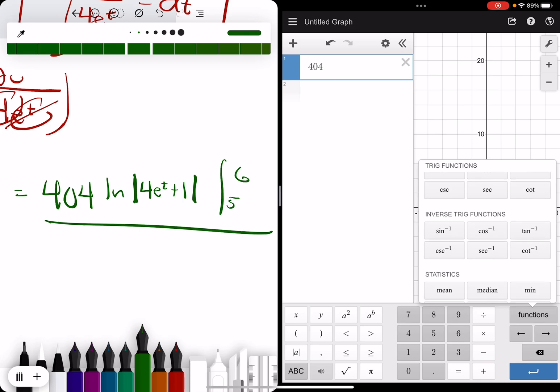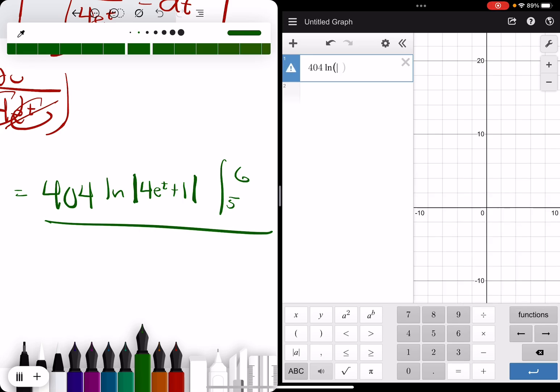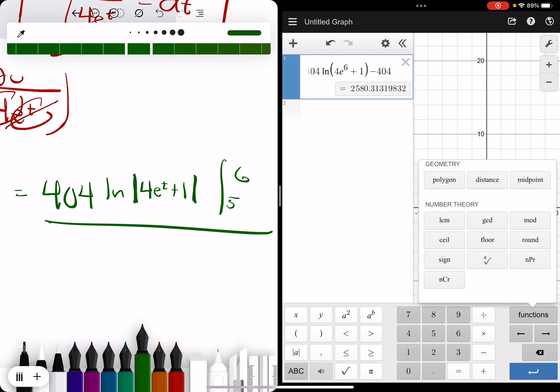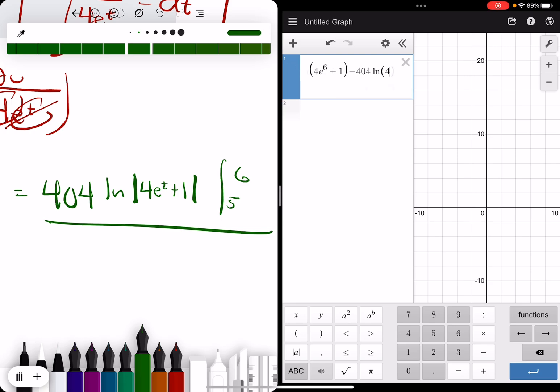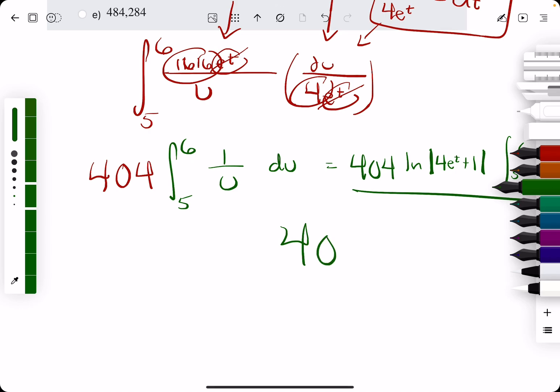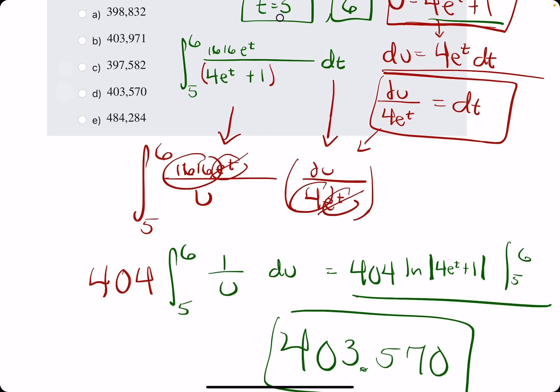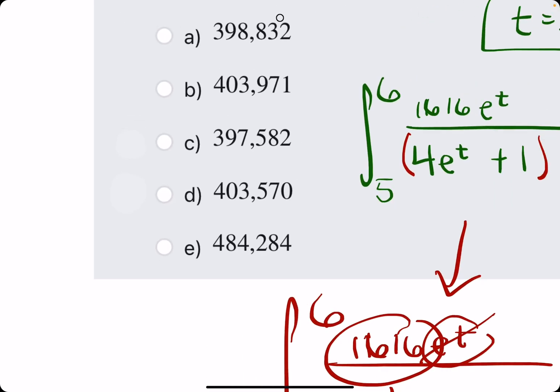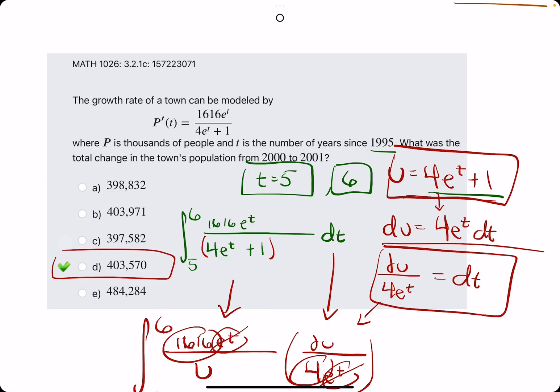404 ln of 4E to the T, which is 6, plus 1, minus 404 ln of 4 times E to the T, which is 5, plus 1, and we get 403.57. And that number is in thousands, mind you. So we're looking for 403,570, or D as our answer.